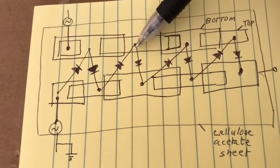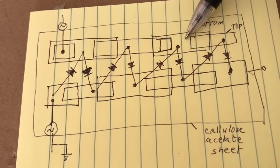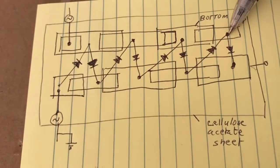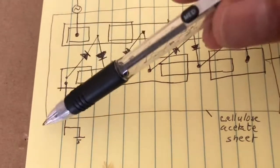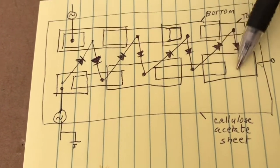On the top you have one, two, three, four, five pieces of aluminum tape and on the bottom of the sheet of acetate plastic you have one, two, three, four, five.